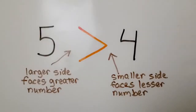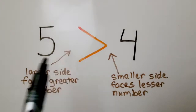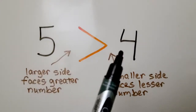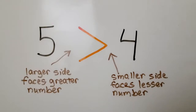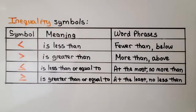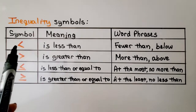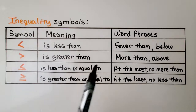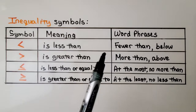When writing the inequality symbols, remember: the larger side faces the greater number and the smaller side faces the lesser number. Here are the symbols and their meanings. The first symbol is 'is less than,' which means fewer than or below.